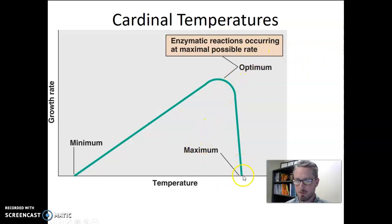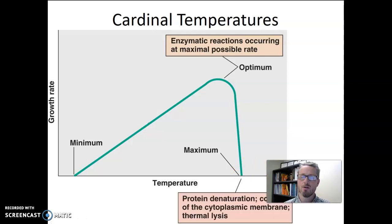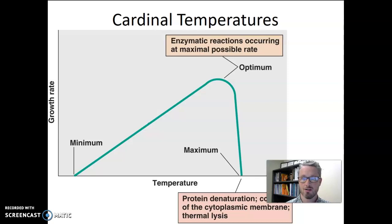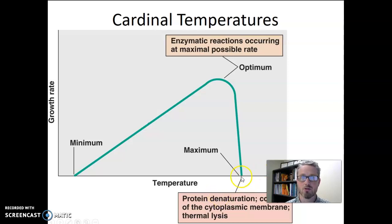At the maximum temperature, as things get too hot for the bacteria to grow, the main effect we observe is that their proteins denature — denaturation just means unfolding — and denatured proteins do not function. At the maximum temperature or above, there's so much protein denaturation that the cell's proteins can't perform any functions and the cell cannot survive; the cell dies at any temperature above the maximum. There are also heat effects on membranes that can cause cell lysis, but the key mechanism is protein denaturation.